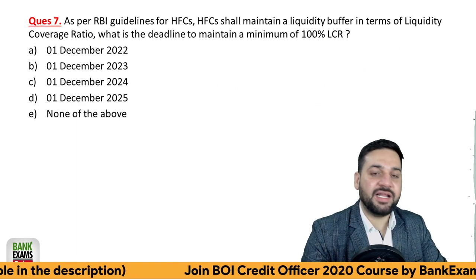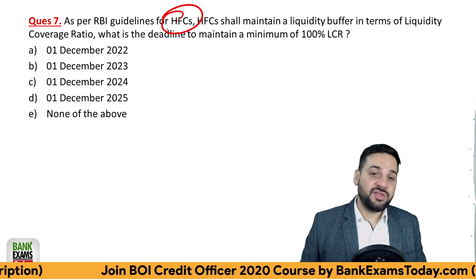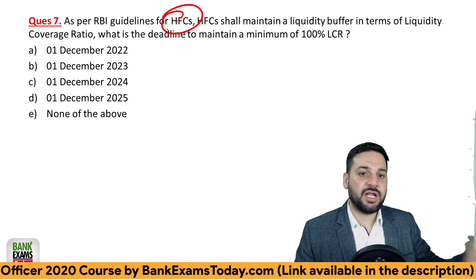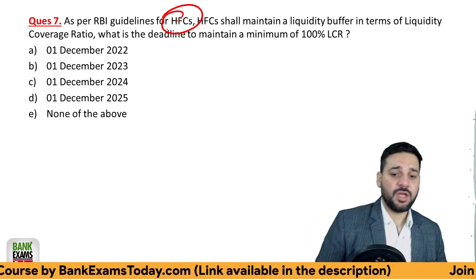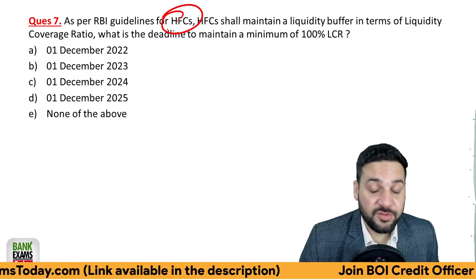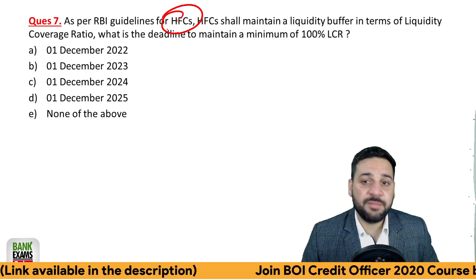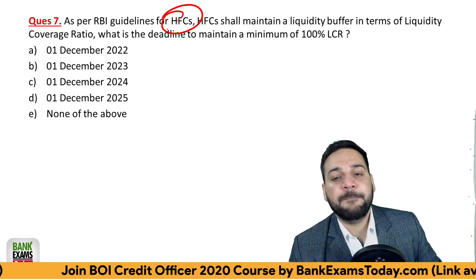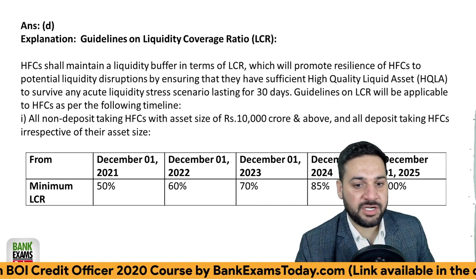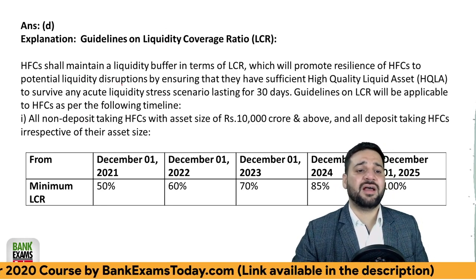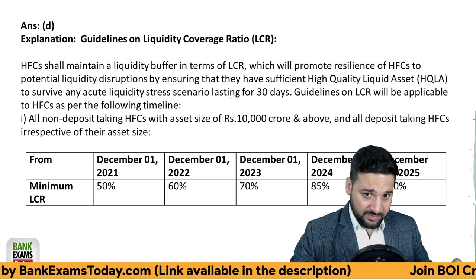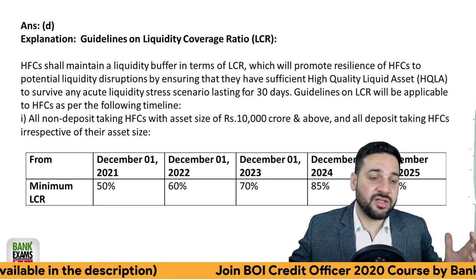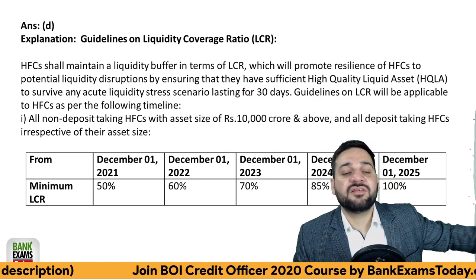Question seven: as per RBI guidelines for Housing Finance Companies (HFCs), which are now monitored by RBI — earlier it was NHB — HFCs shall maintain a liquidity buffer in terms of the Liquidity Coverage Ratio (LCR). What is the deadline to maintain a minimum 100 percent LCR? The LCR is essentially a buffer ensuring HFCs have enough funds to meet their next 30 days of liquidity requirements.